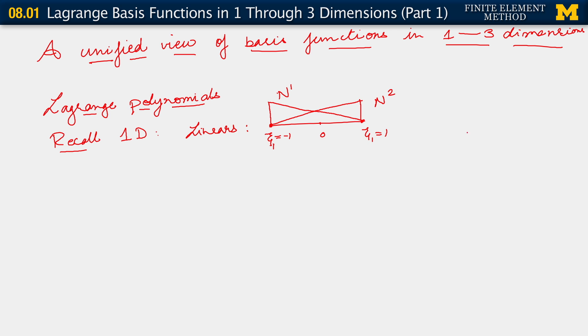So these are linears, and you recall how they were written. They were written as n1 of c1 equals 1 minus c over 2, and n2 c1 equals 1 plus c1 over 2.